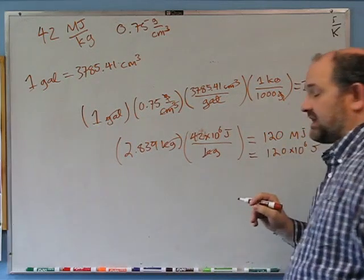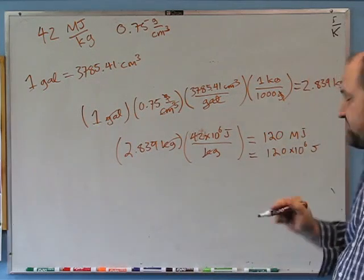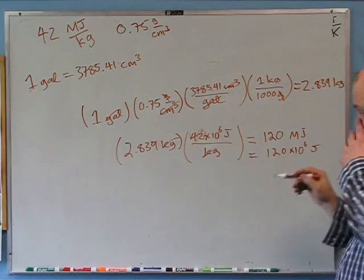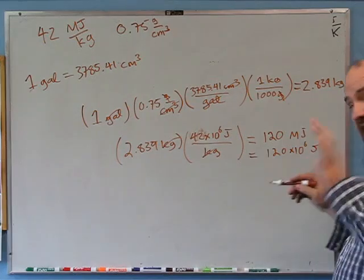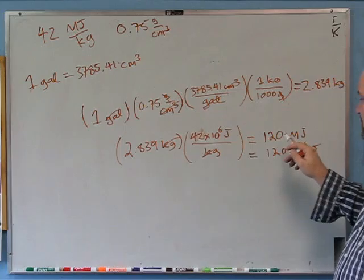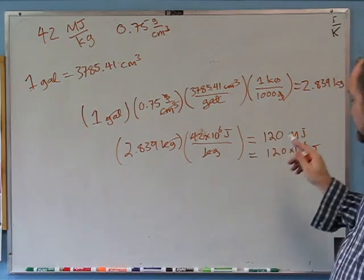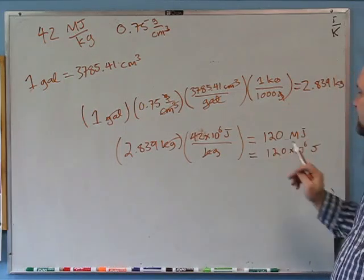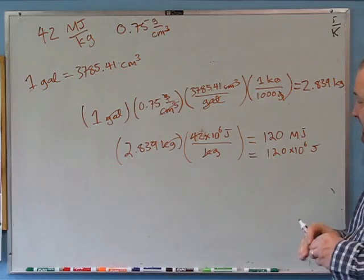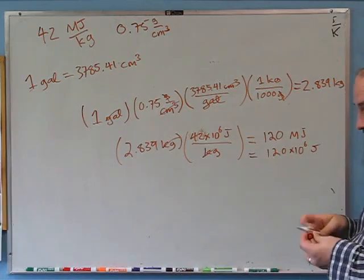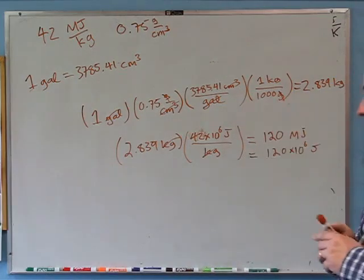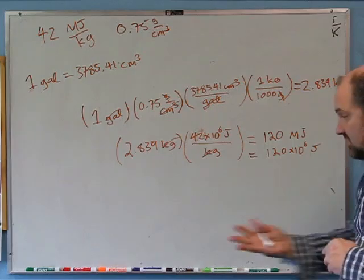120 megajoules or 120×10⁶ joules — either way means the same thing. Remember, it takes about 150 megajoules to throw a fastball — let's say a curveball, about 150 joules. You could throw a million curveballs with one gallon of gas if you could perfectly convert stored chemical energy into kinetic energy of a baseball.